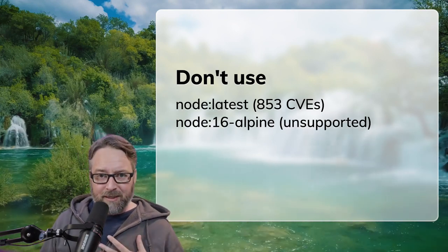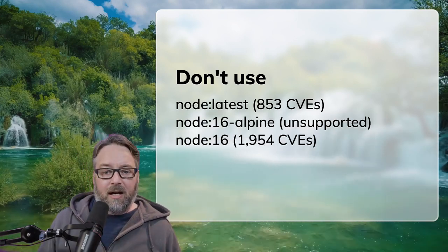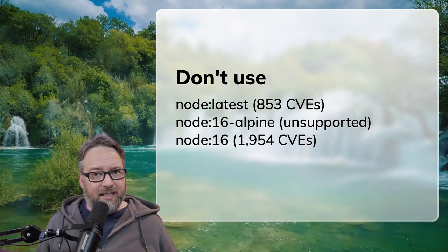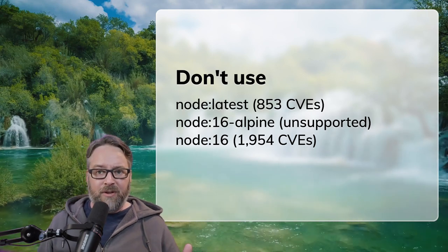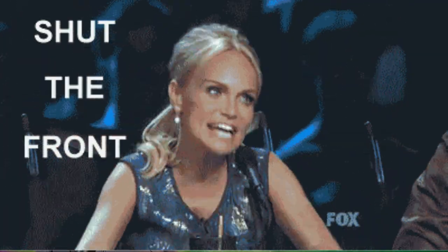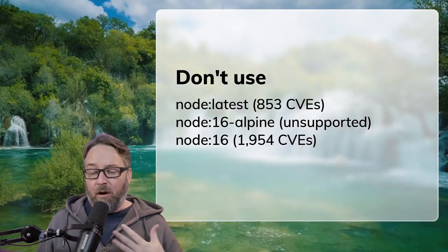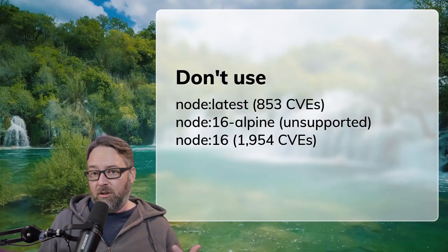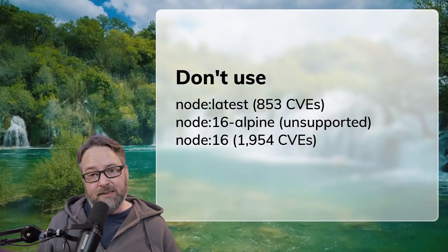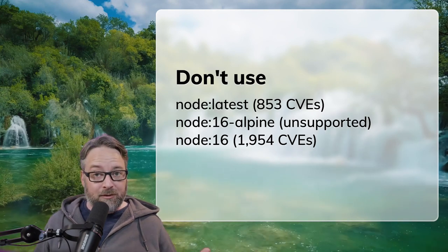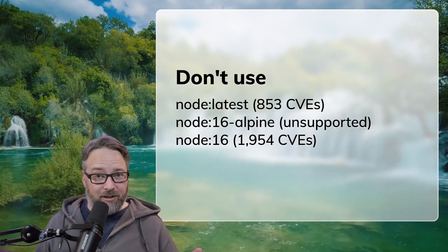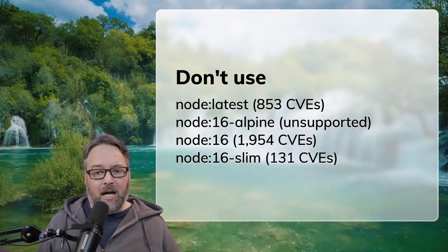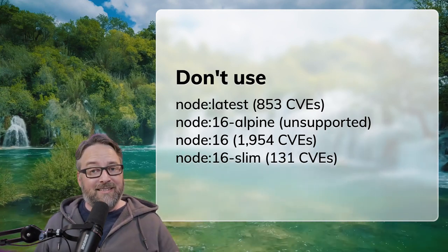And of course, I mentioned node:16 — nearly 2,000 CVEs, even worse than node:latest. So we just want to stay away from that as well. I always use even numbers in Node — those are considered the long-term stable releases. So 16 would be what we'd use right now; 18 is right around the corner. I would recommend slim.